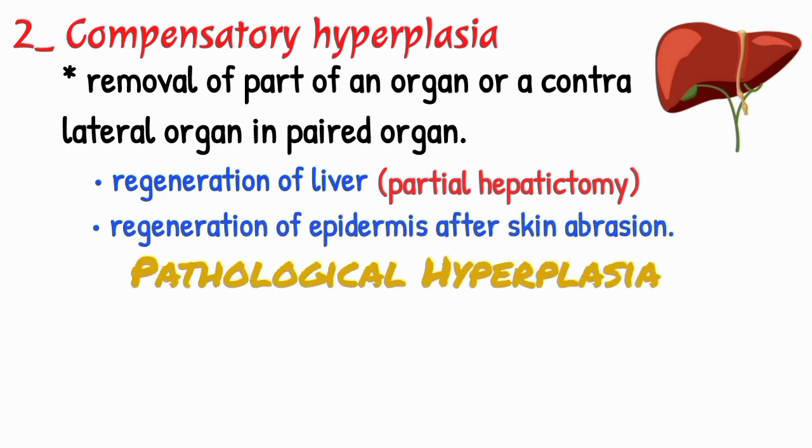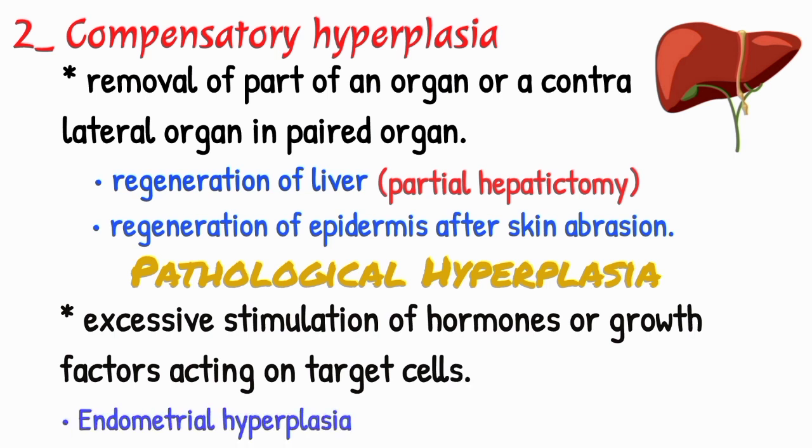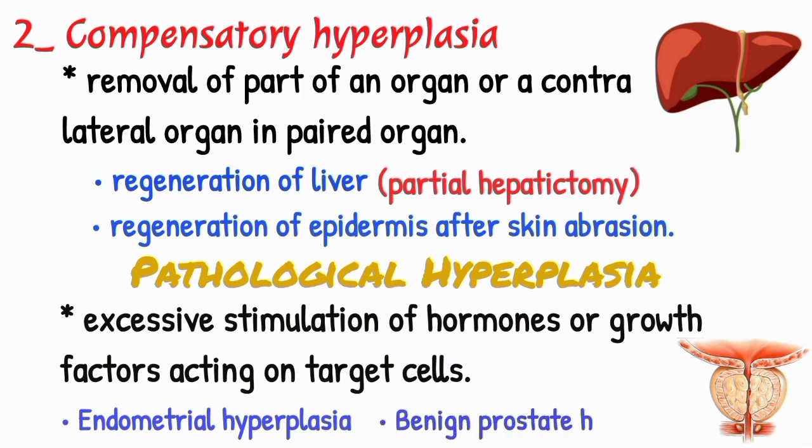Pathological hyperplasia is due to excessive stimulation of hormones or growth factors acting on target cells. Examples include endometrial hyperplasia following estrogen excess and benign prostatic hyperplasia.